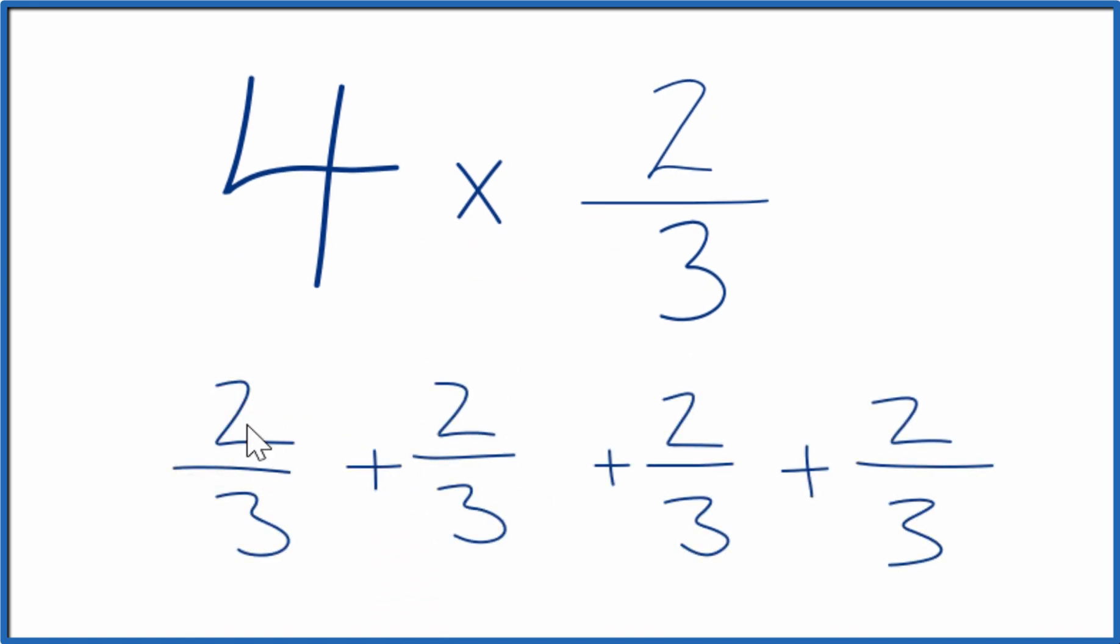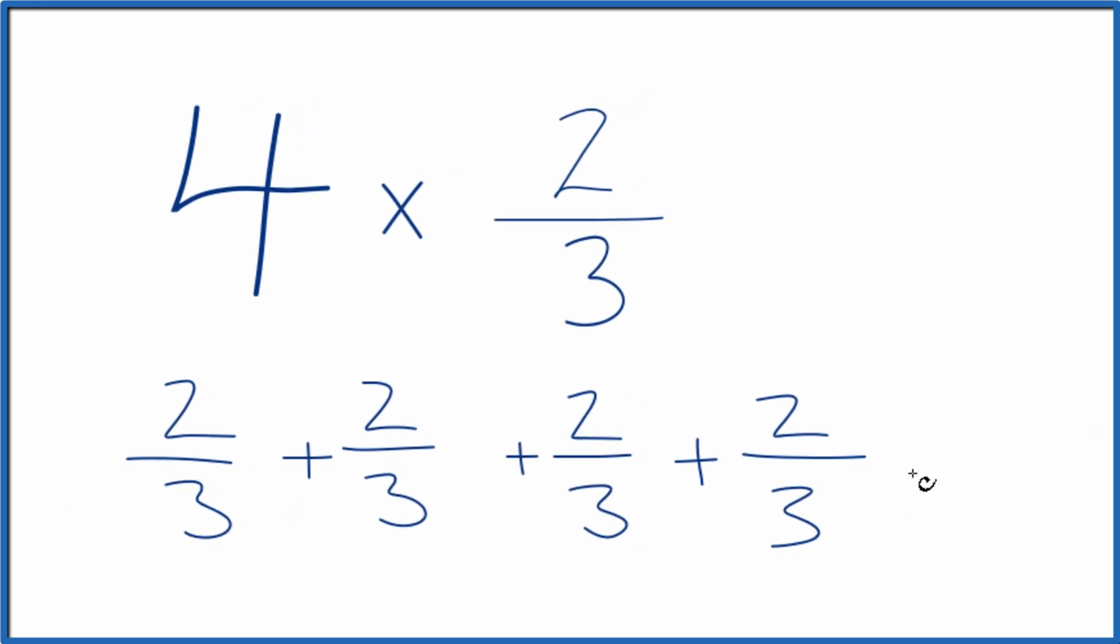So we have 2 thirds 1, 2, 3, 4 times. So that's one way to think about it. And with fractions, when you have the denominator the same, you bring that across, and then you add the numerators.